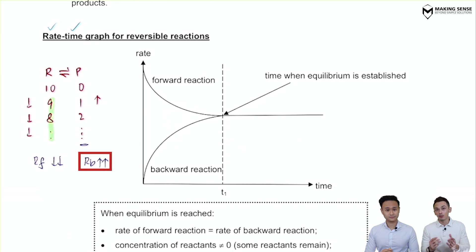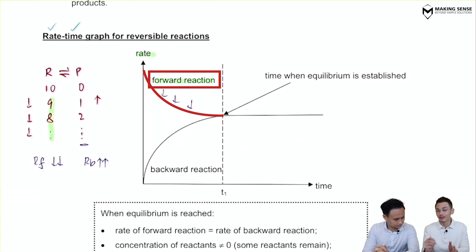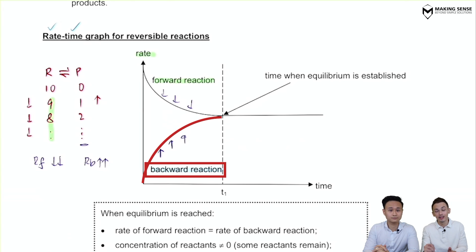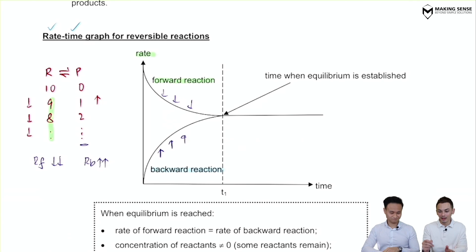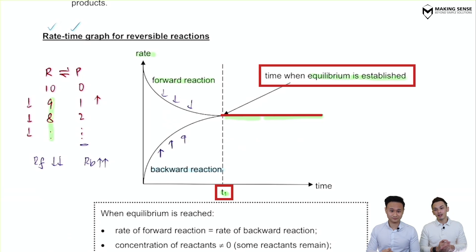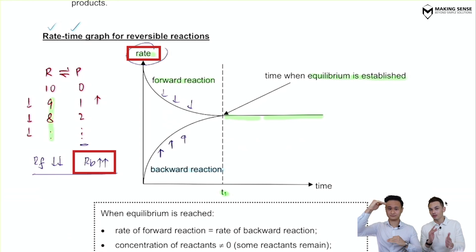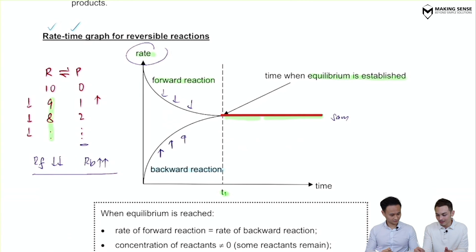One key thing to be aware of is how the respective rates change against time. The rate of the forward reaction is dropping — it gets slower and slower. But the rate of the backward reaction gets faster and faster against time. There will come a point where the rate of the forward reaction is exactly the same as the rate of the backward reaction — at T1, where the rates are identical.